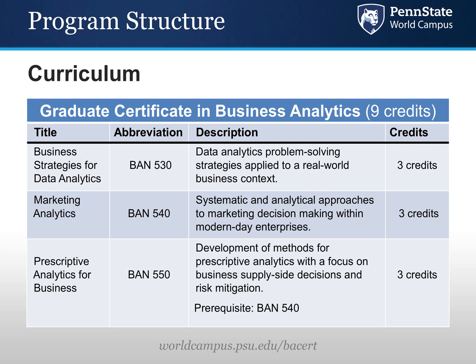Let's switch to the program we have here at Penn State in business analytics. This is entirely online, offered through World Campus. Our certificate in business analytics is three courses, nine credits. The first is Band 530, which corresponds to descriptive analytics. The second, Band 540, is a marketing analytics course with heavy emphasis on predictive analytics. The third is Band 550, which is a prescriptive analytics course with a supply chain component. Band 540 and Band 550 are complementary — one looks at supply side analytics and the other at demand side analytics. Taken in this sequence, these three courses form the certificate in business analytics.